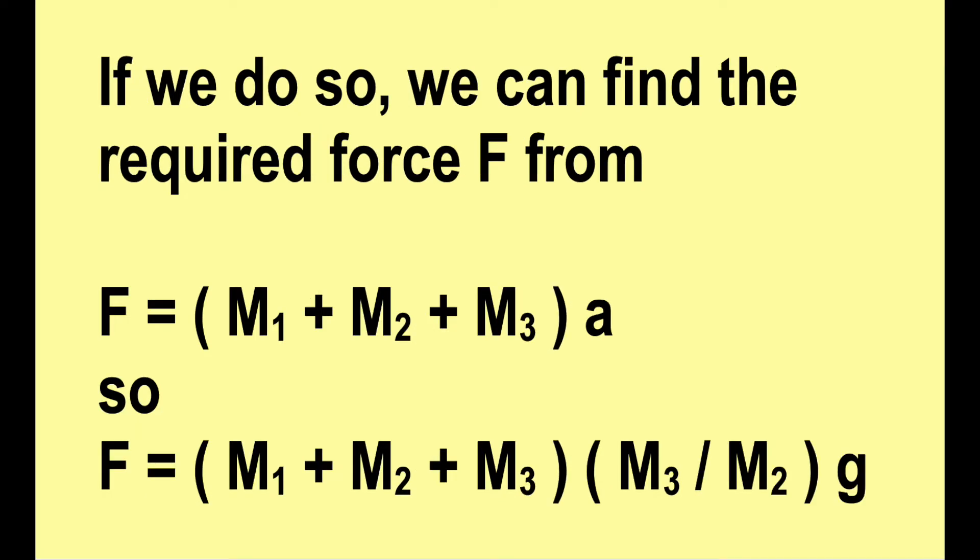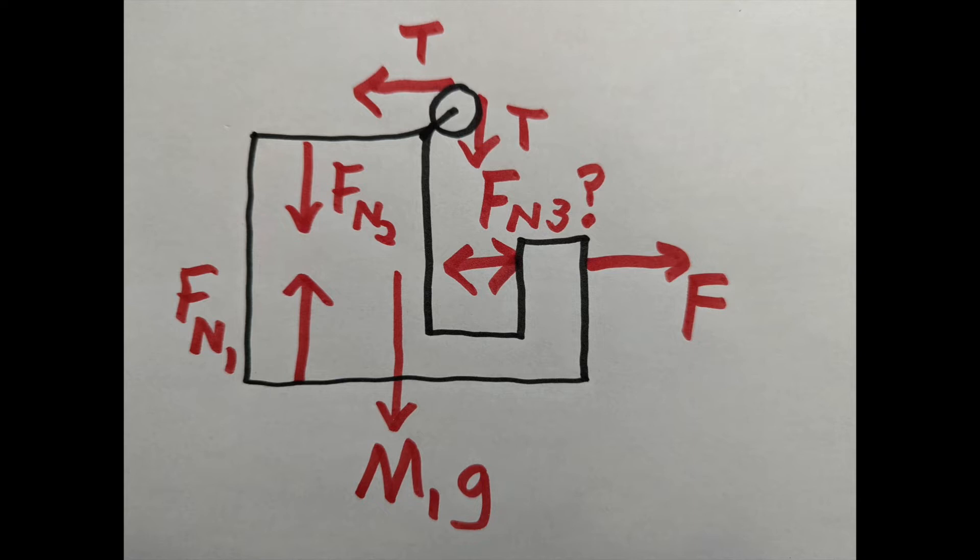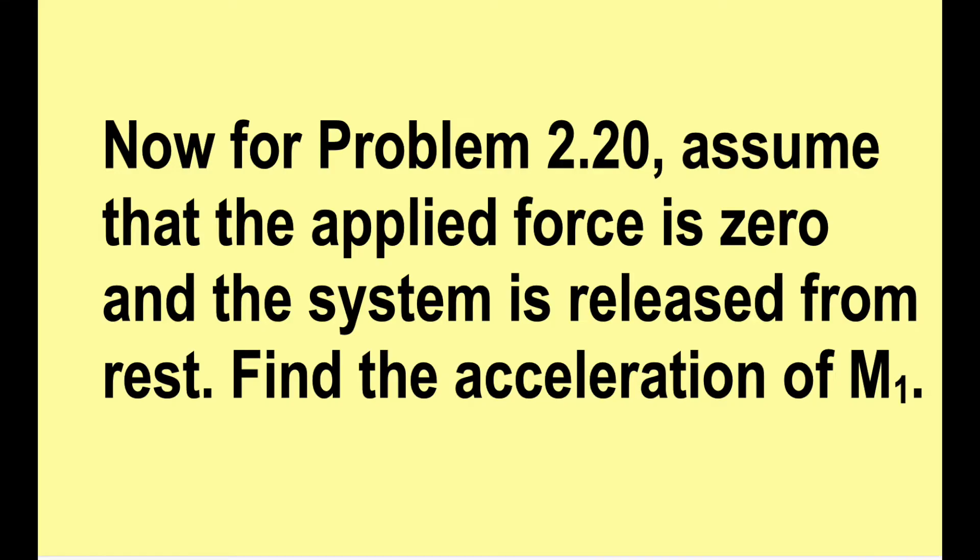If we do so, we can find the required force F from F equals (M1 + M2 + M3)a, so F equals (M1 + M2 + M3)(M3/M2)g. That's much nicer than using force diagram 1. Now for problem 220, assume that the applied force is zero and the system is released from rest. Find the acceleration of m1.